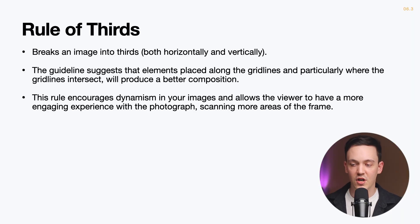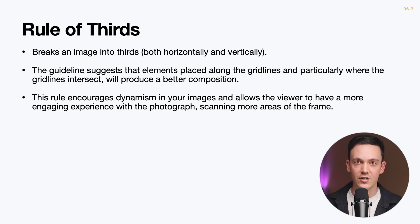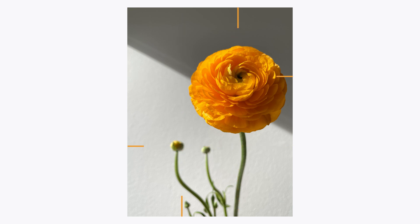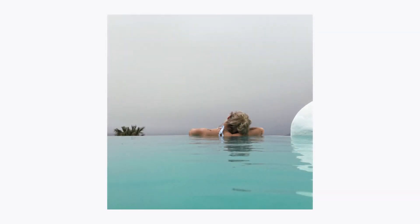The first and perhaps the most popular compositional guide is the rule of thirds. The rule of thirds offers a way to compose our subjects based on a three-by-three grid — the same grid that we enabled on our iPhone camera many steps ago. This principle suggests that by placing subjects on these third lines, or even better, at one of the four intersecting points, we'll produce a better composition, creating more dynamism while still maintaining balance in our image.